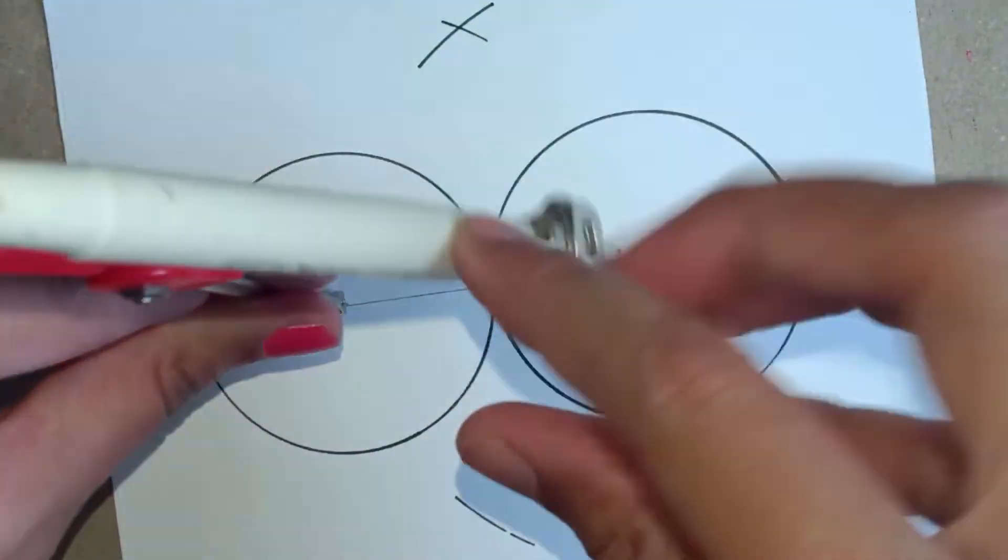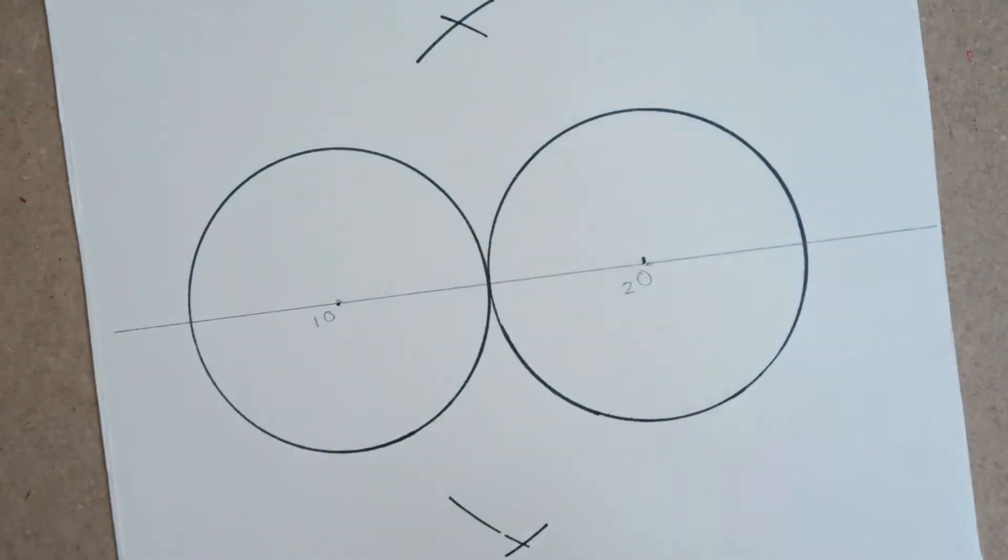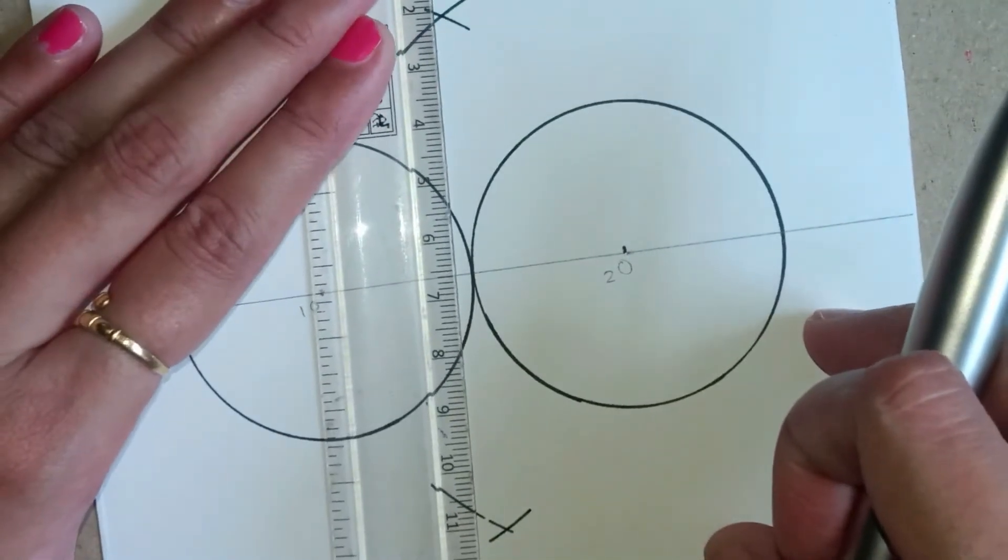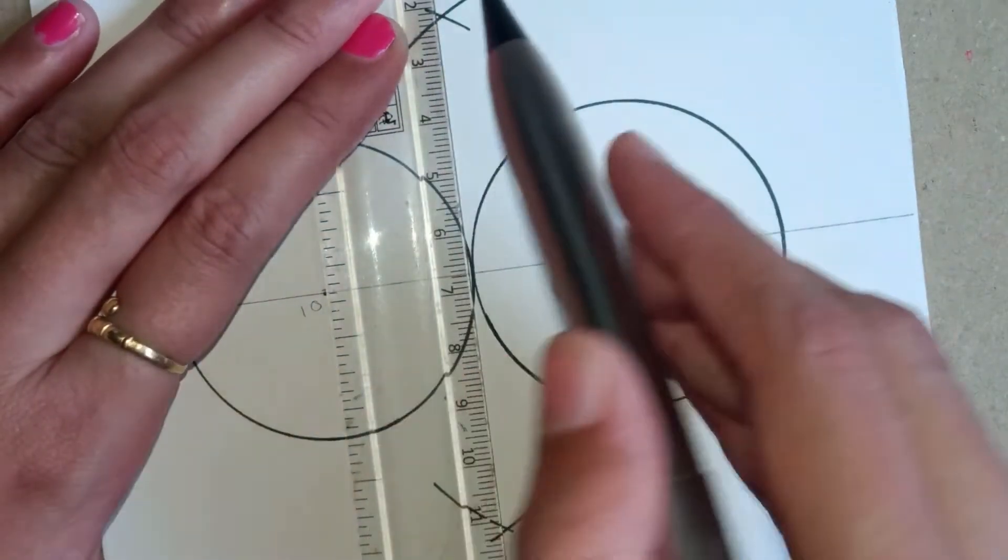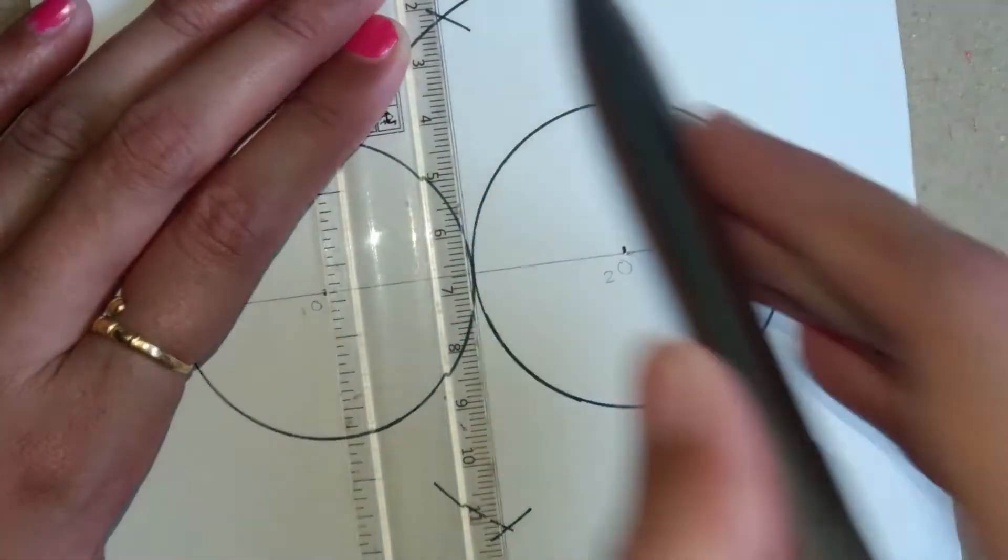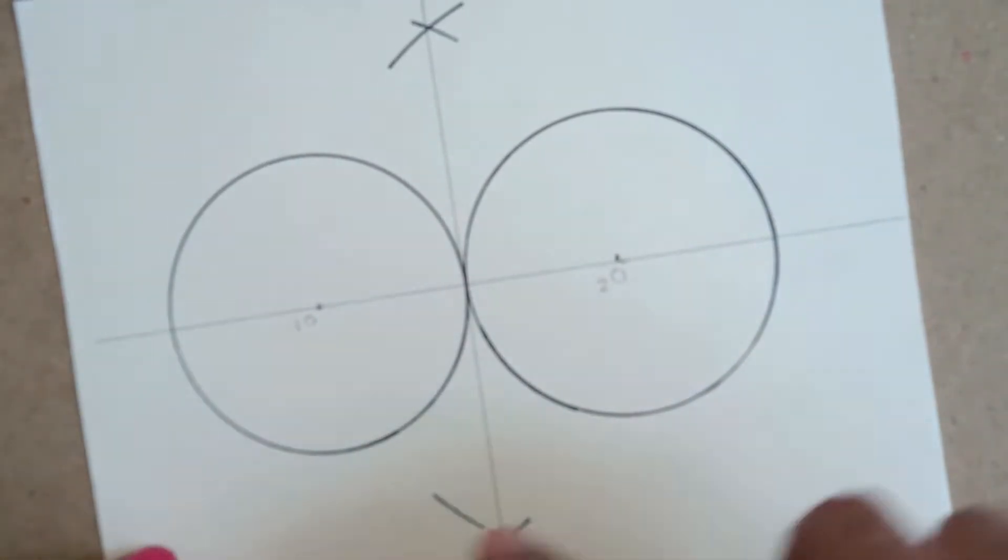Now we get two points. We will join these points. This line should pass exactly through the point where the circles are touching each other. So in this way we get a perpendicular line which passes through the center of the two circles.